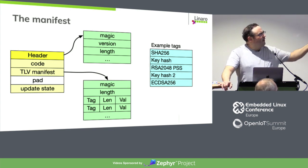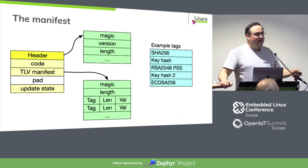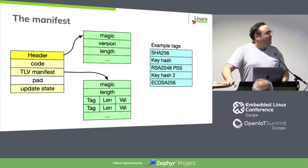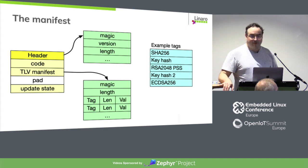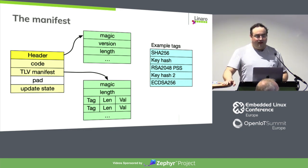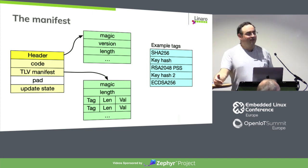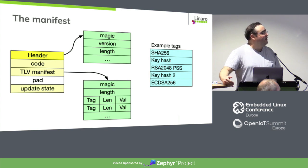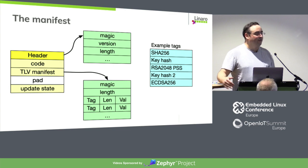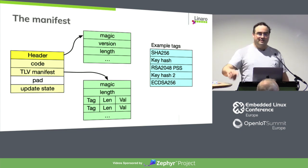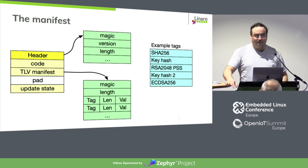Following the header is the actual executable code, running right in place. Due to ARM alignment constraints on vector tables, there's sometimes padding. Then following the code — located via header plus length — is the TLV manifest, which has a magic number, a length, and then a bunch of tag-length-value triplets. These might include a SHA-256 hash, a key hash (the hash of a public key so the bootloader knows which key to check against), and then possibly signatures like an RSA 2048 PSS signature. The scheme allows as many signatures as desired — the code walks through them and considers the image valid if it finds one matching its list of allowed public keys.